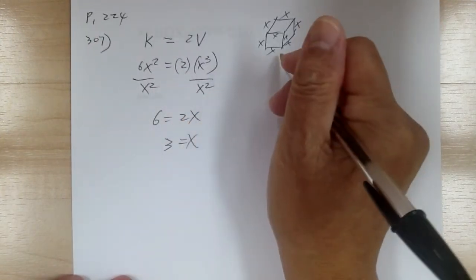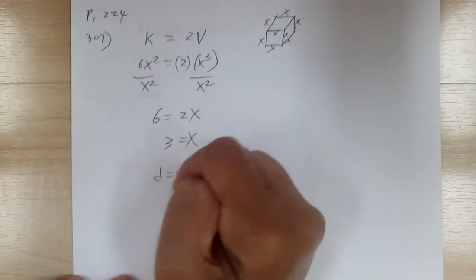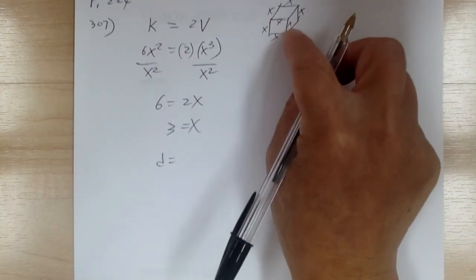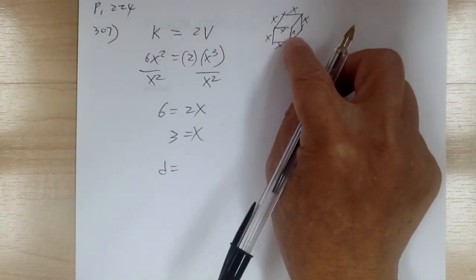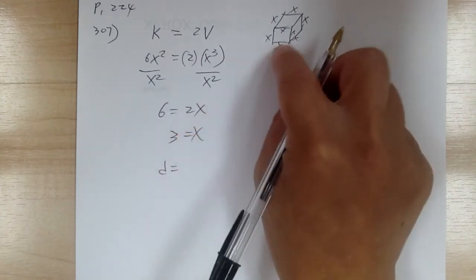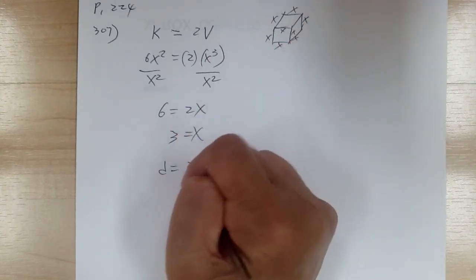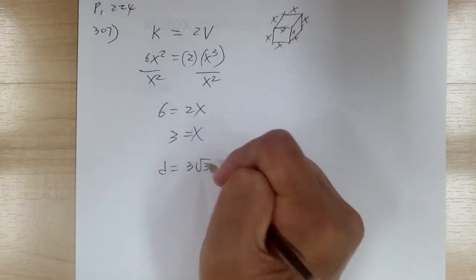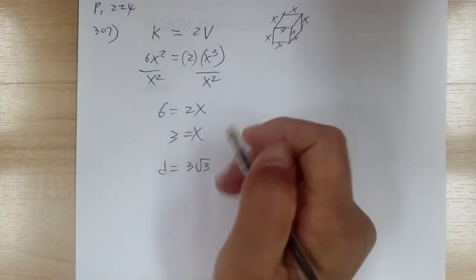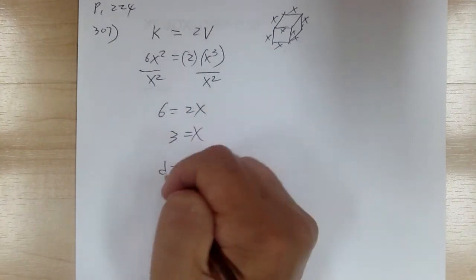Once you find x equals 3, figure out the diagonal. The diagonal is each side multiplied by square root of 3. So the diagonal equals 3 square root of 3. And that's it.